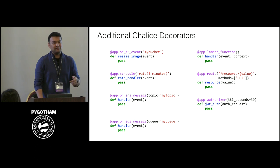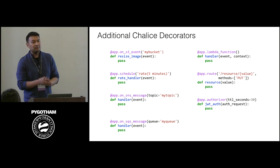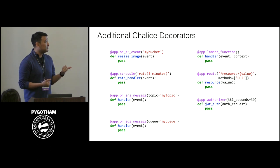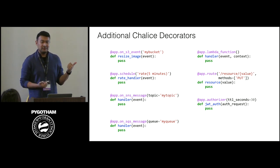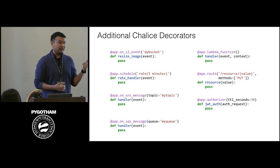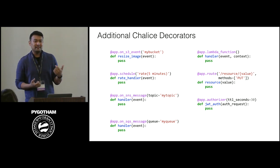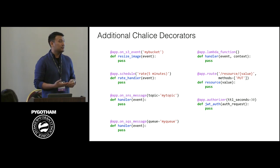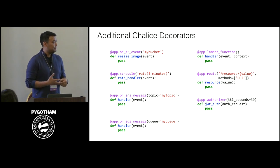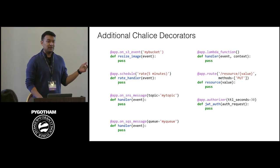There are a number of other things Chalice can do. There's app.schedule — if you want a Lambda function to run every five minutes, just decorate the function with that. There's integration with SNS and SQS. And on the REST API side, it gives the Flask-style API that integrates with API Gateway — you use app.route and authorizers to handle authorization for your routes.